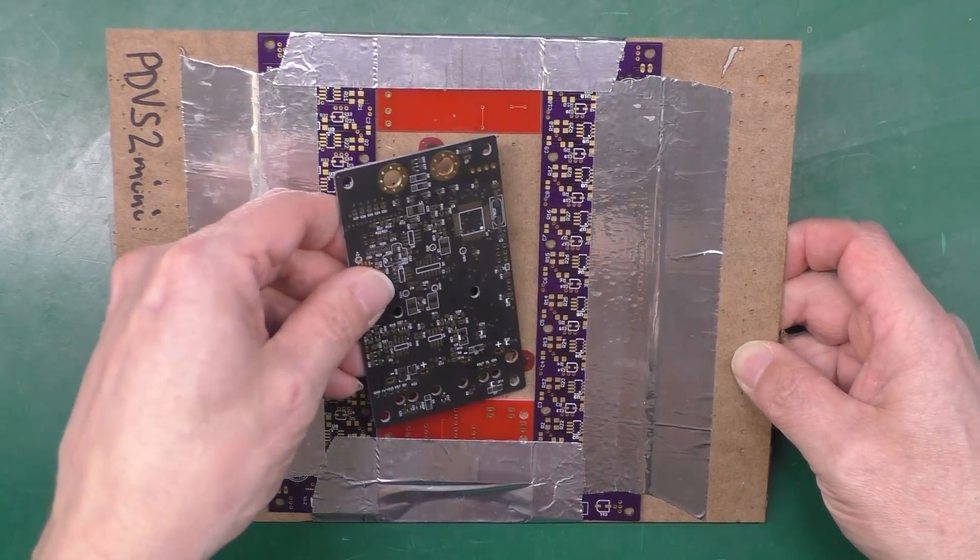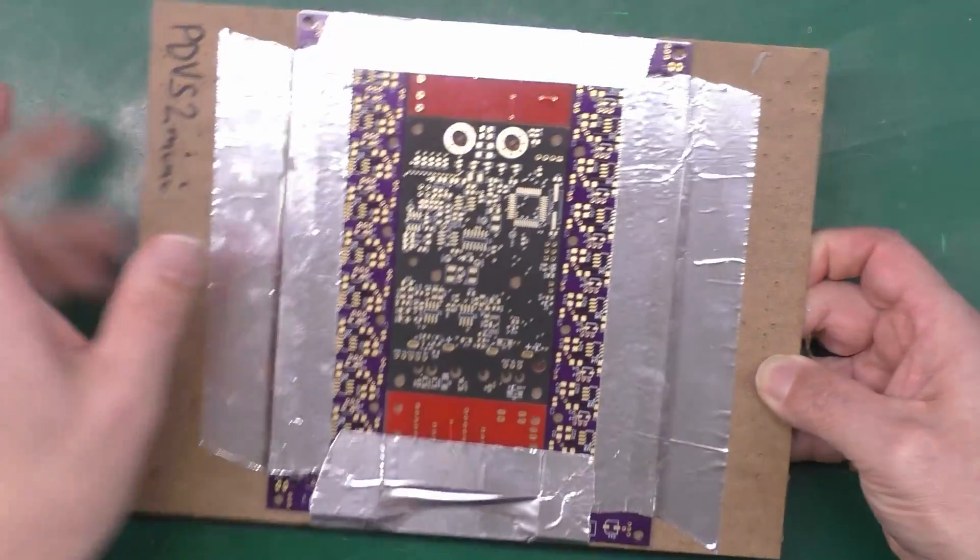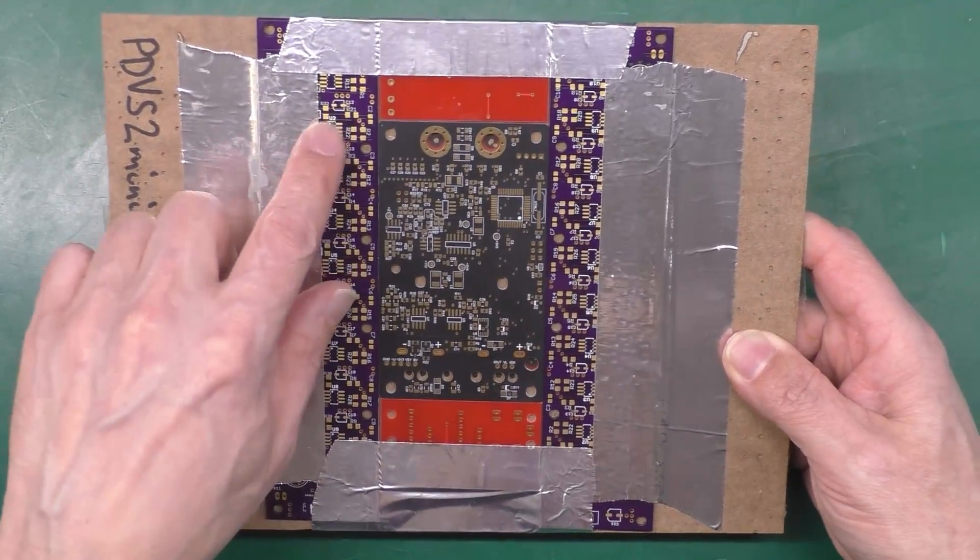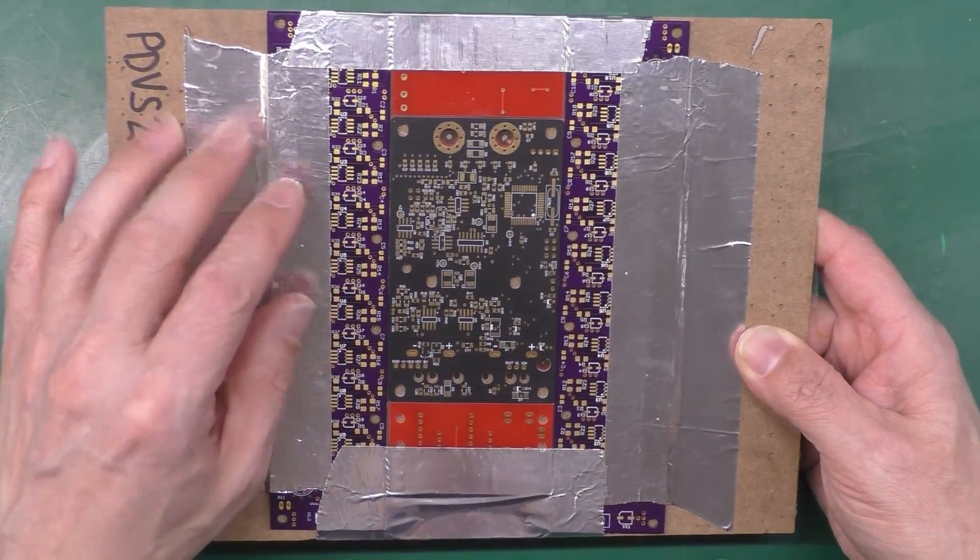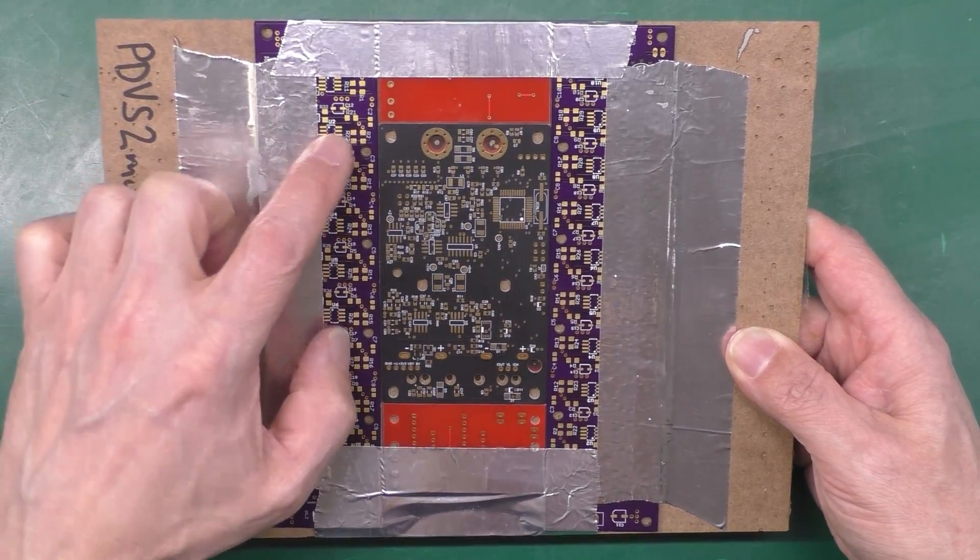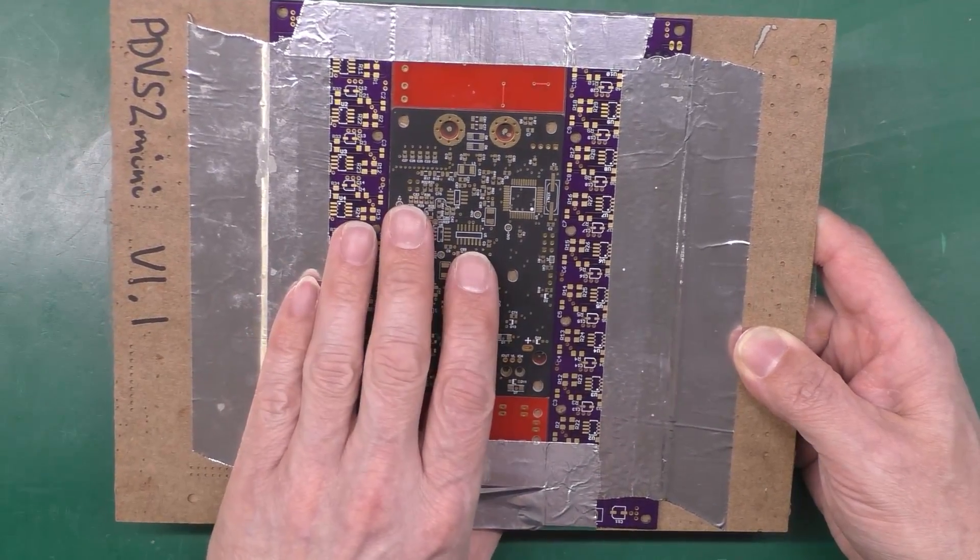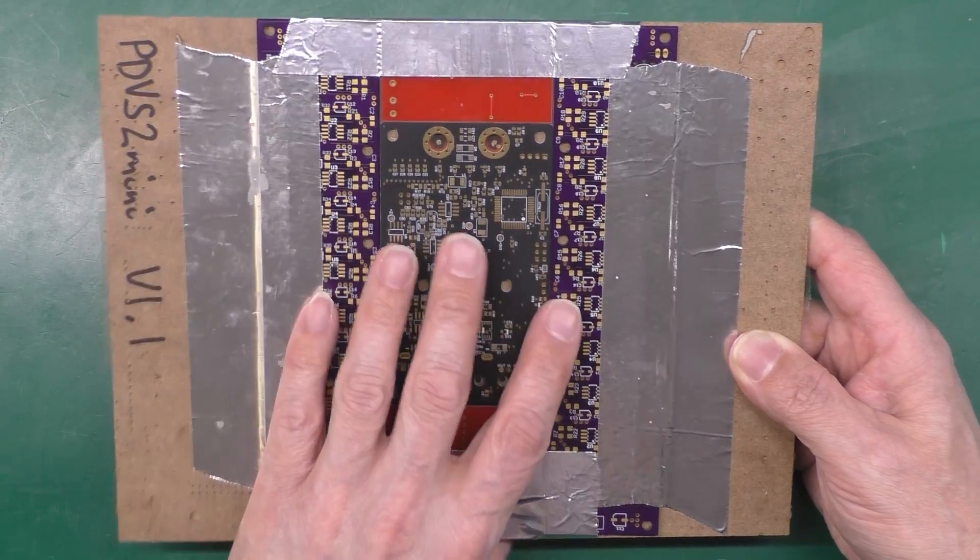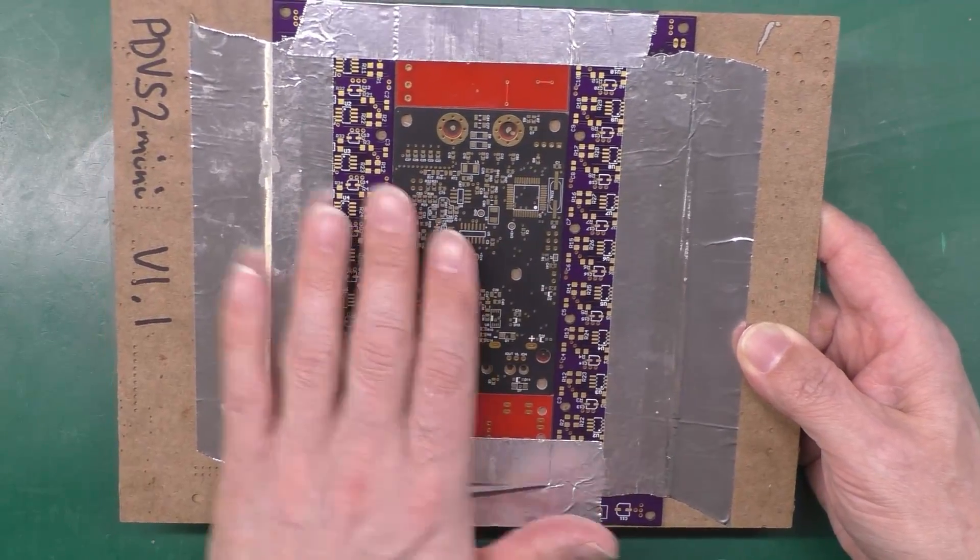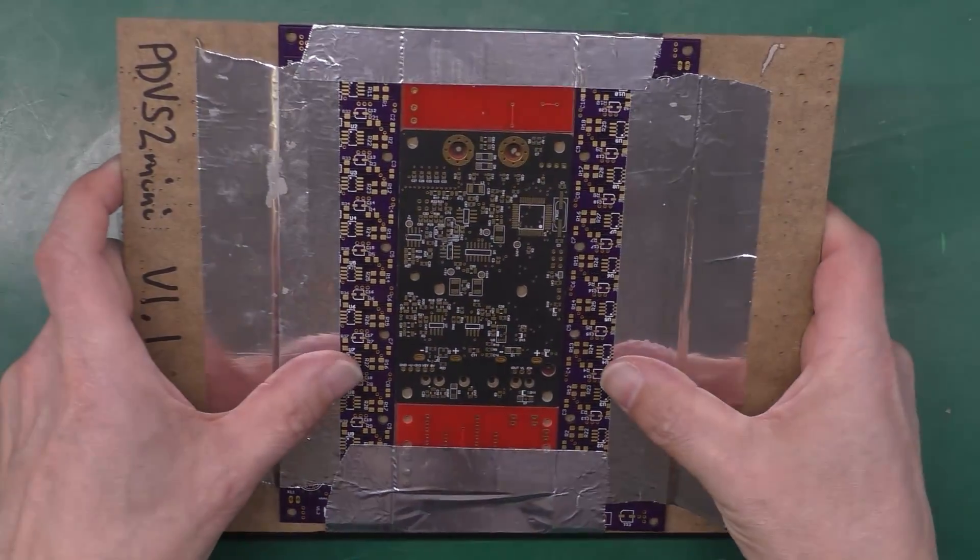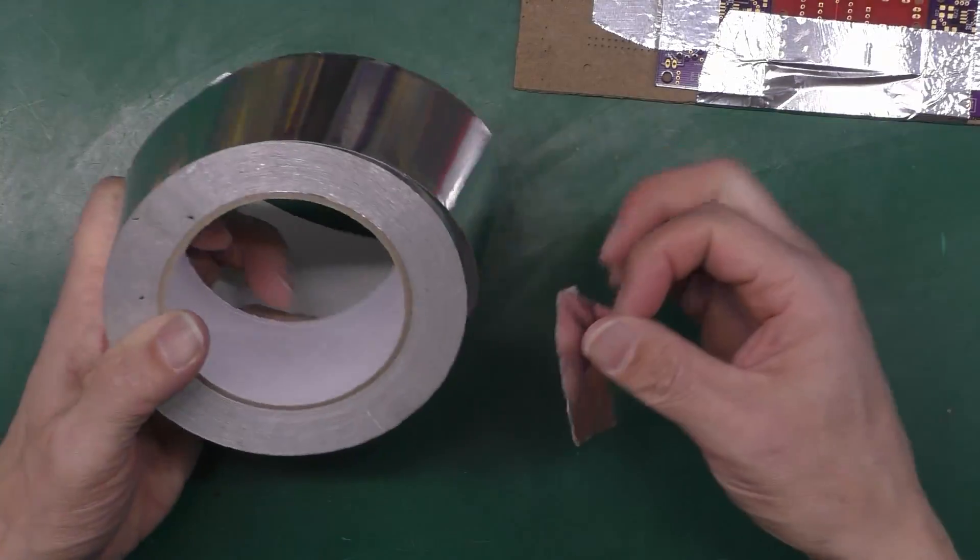You can see I've used some old bits of PCB around the edge there and I've taped that down. The reason I've used old bits of PCB is because they're the same thickness as my target PCB, 1.6 millimeters, and that means everything's totally flat.